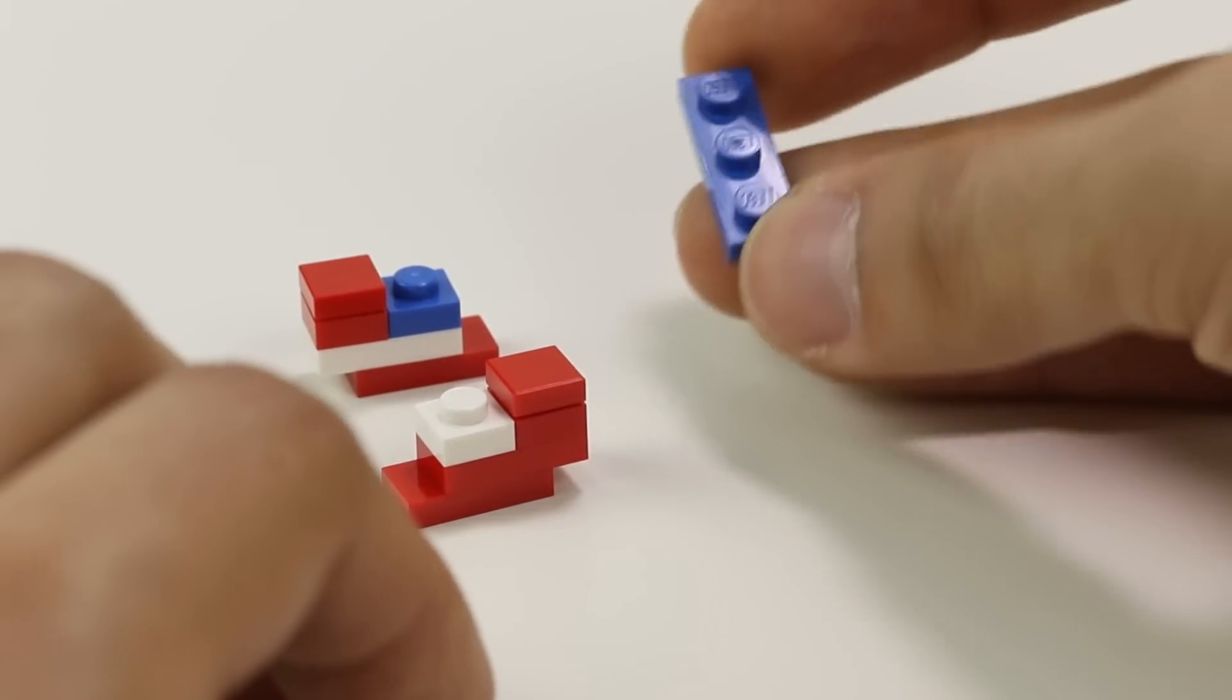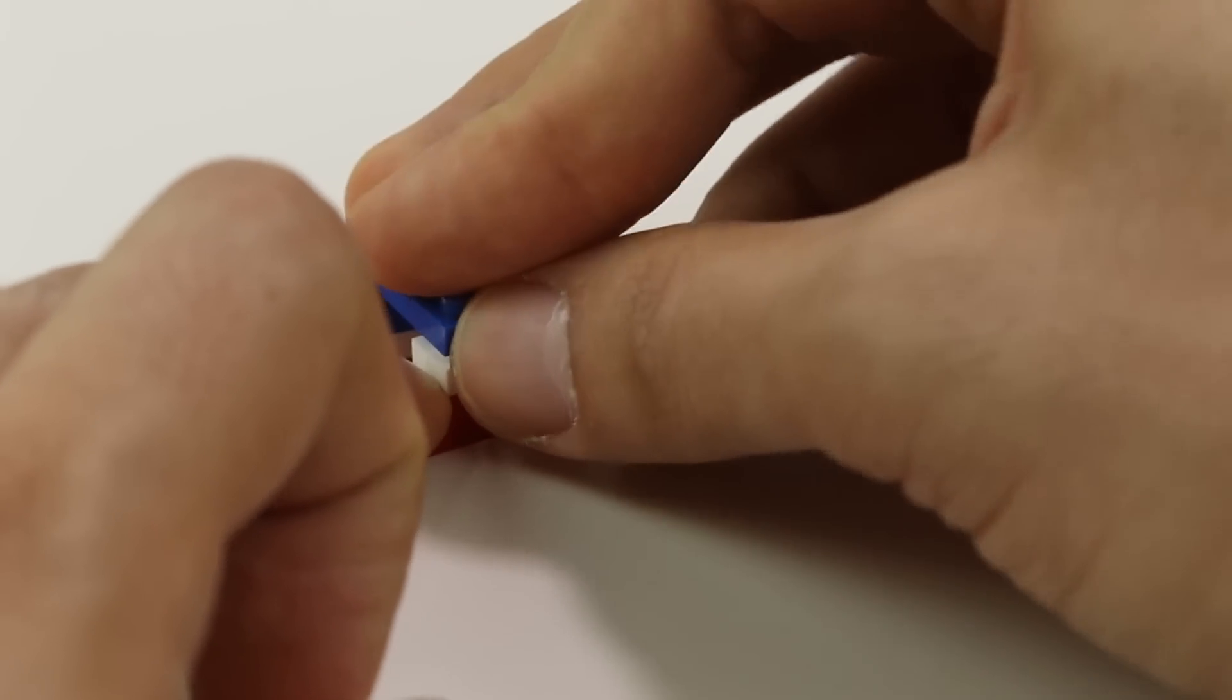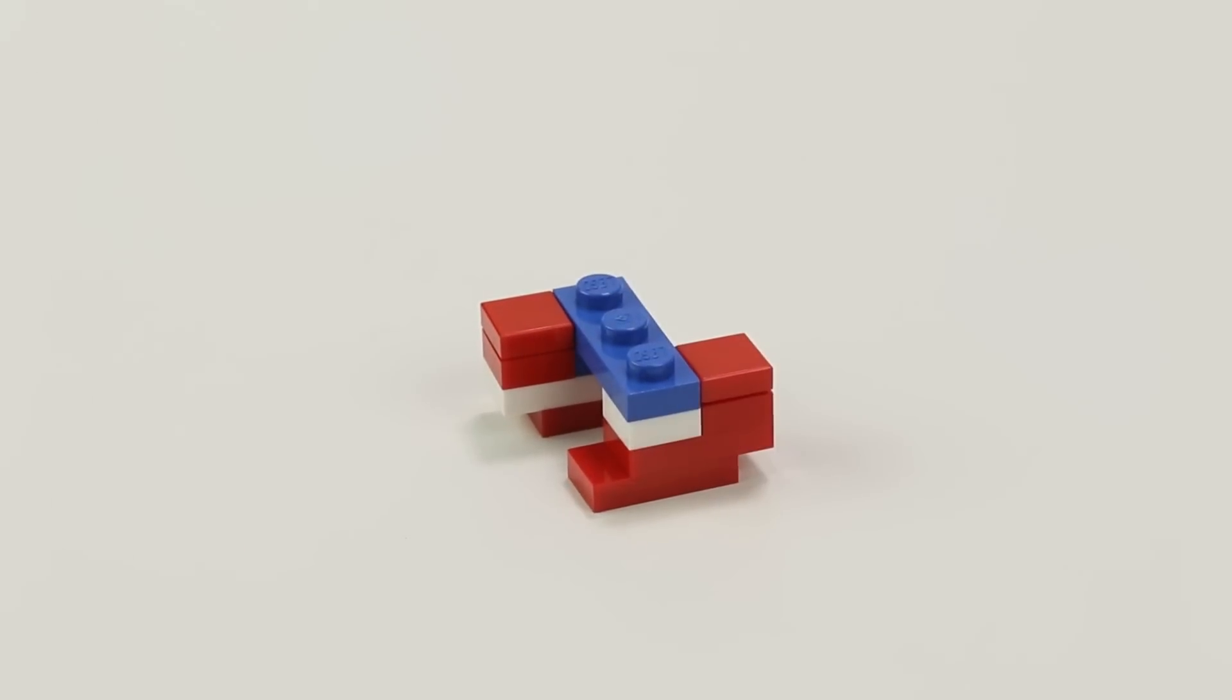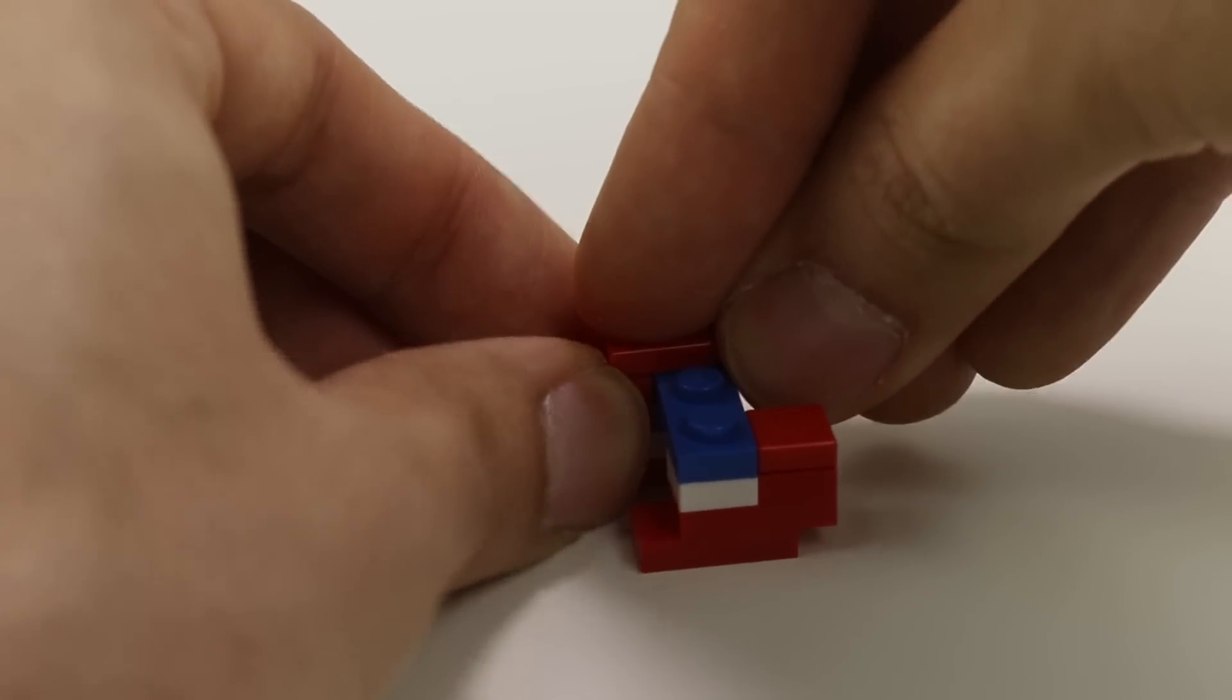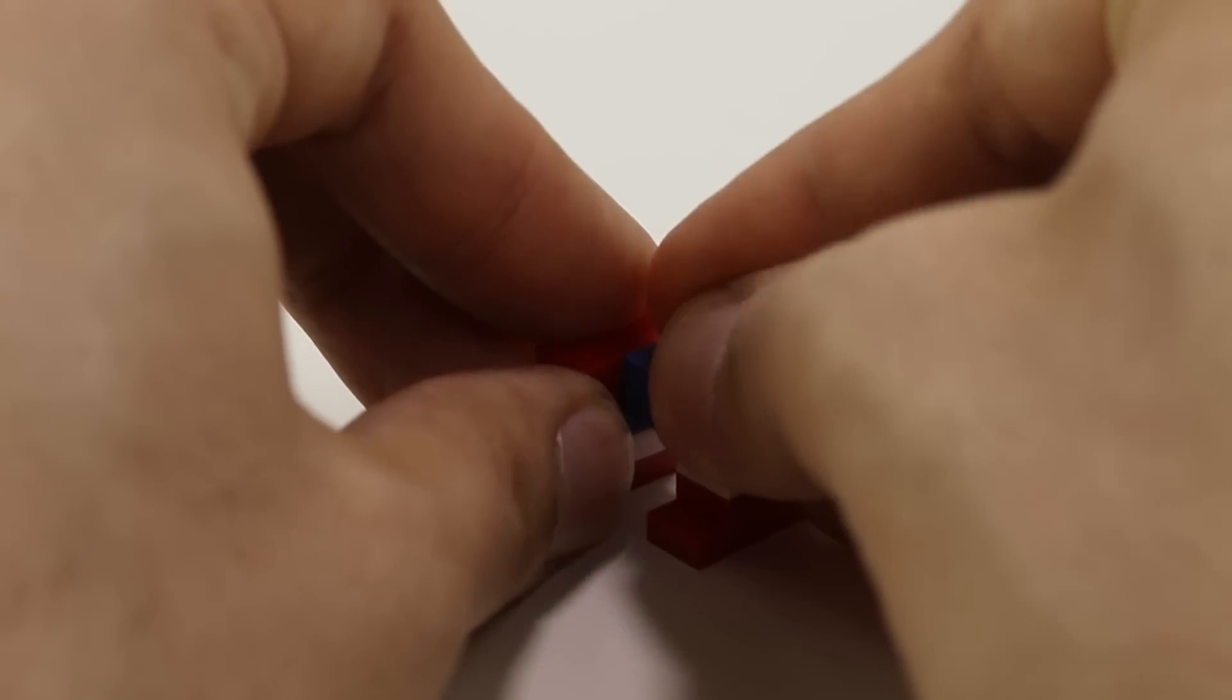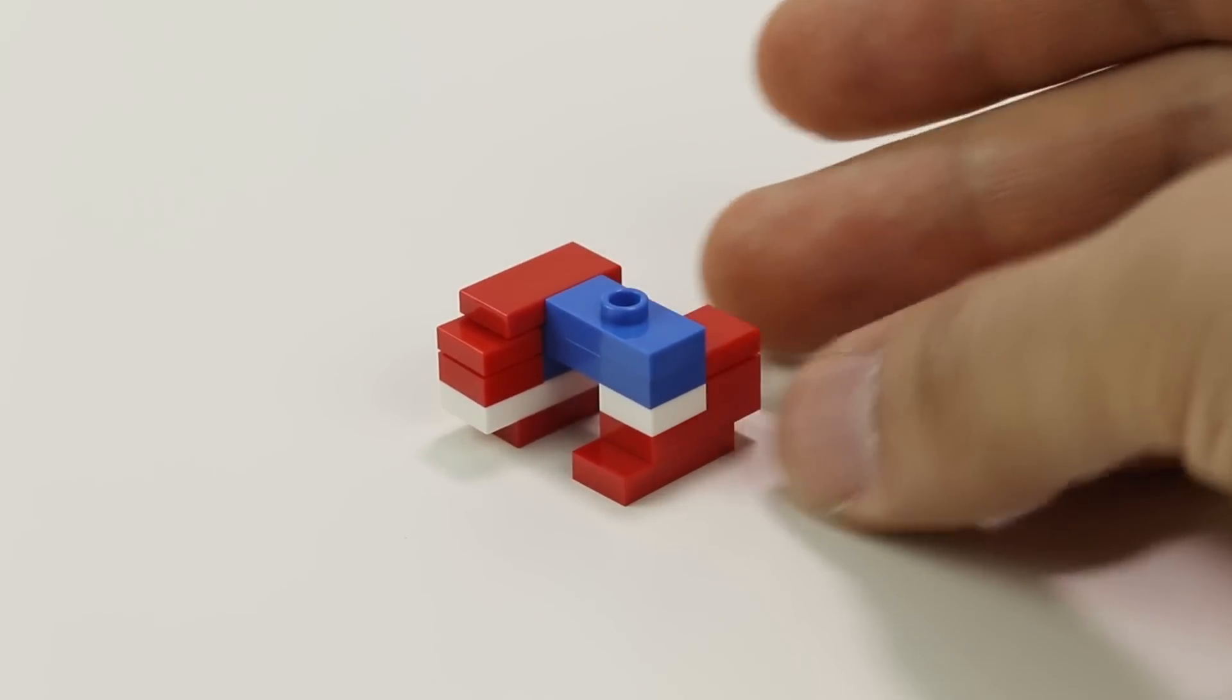We're going to cross them with a 1x3 plate, this time in blue, just like that. We're going to leave one stud width of space in between them. Then to top it off, we're going to add a 1x2 red tile on this side and a 1x2 blue offset plate right there. That's how you do leg shape number two.